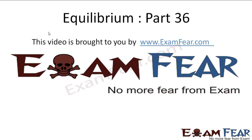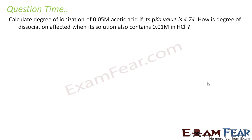Hello friends, this video on equilibrium part 36 is brought to you by examfia.com. Before watching the video, please make sure that you have watched all the previous parts. We need to calculate the degree of ionization of 0.05M acetic acid if the pKa value is given, and how the degree of ionization and dissociation is affected when the solution also contains 0.01M HCl.